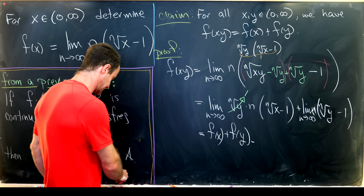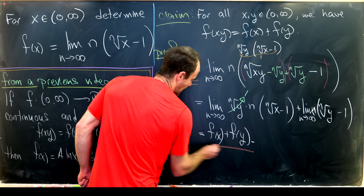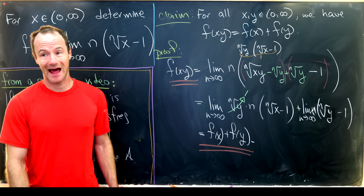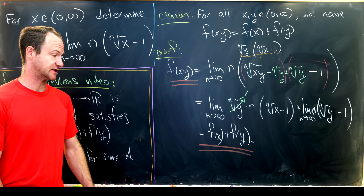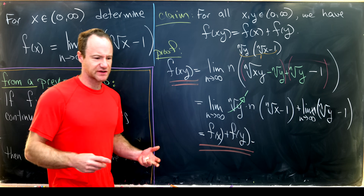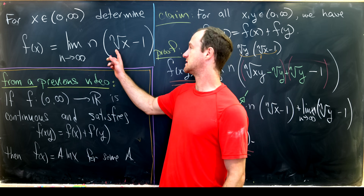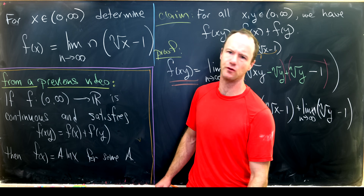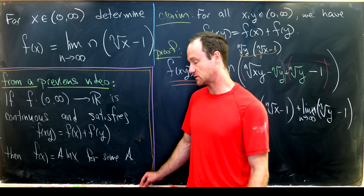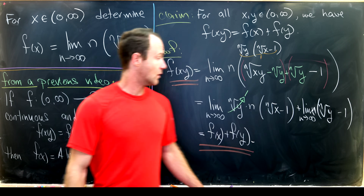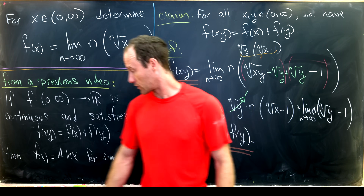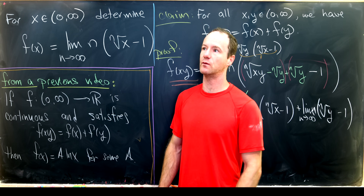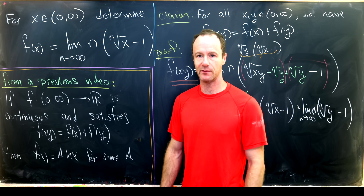Looking at the extreme left and right-hand sides of our calculation, we have proved that our function satisfies the functional equation. As for continuity, it holds because f is the limit of continuous functions — more precisely, the uniform limit of continuous functions, though there is a slight sketchiness there too. So all that remains is a calculation to show that the constant a is in fact 1, which retrieves the result from the first solution.